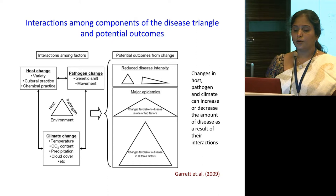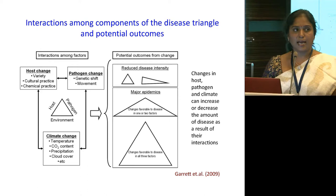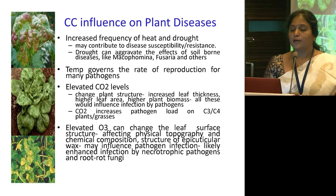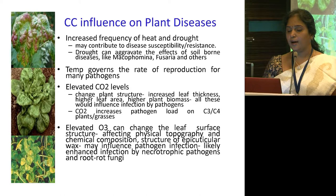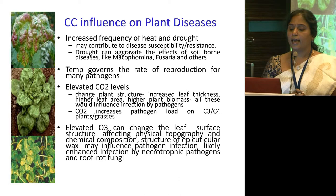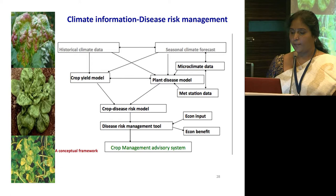Coming to climate change and diseases: there is a host-pathogen-environment triangle as far as disease invasion is concerned. Changes in the host, pathogen and climate can increase or decrease the amount of disease through their interaction. Climate change increases the frequency of heat and drought, which may contribute to disease susceptibility or resistance. Drought can aggravate the effects of soil-borne diseases like Macrophomina, Fusaria and others. Temperature governs the rate of reproduction for many pathogens, and elevated CO2 can change plant structure — increased leaf thickness, higher leaf area, higher plant biomass — and increases pathogen load on C3, C4 plants and grasses. Elevated ozone can also change leaf surface structure affecting physiology, topography and chemical composition.